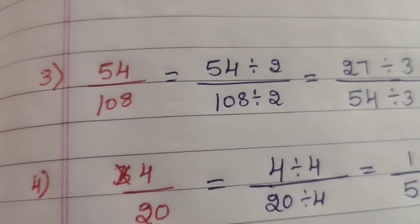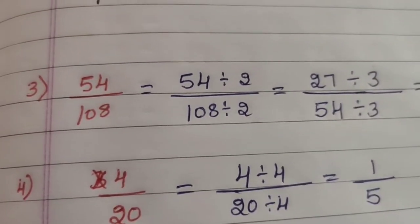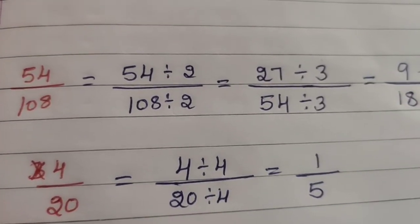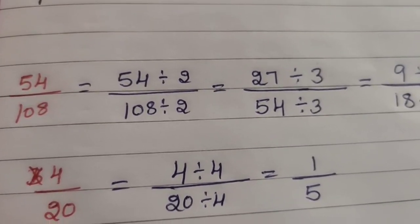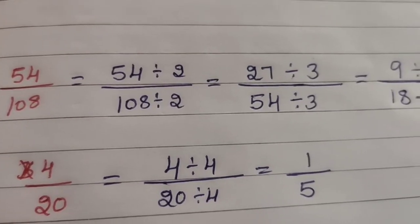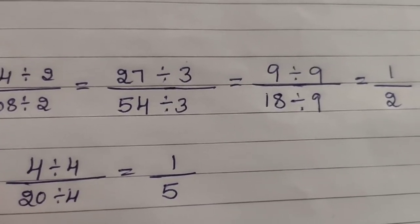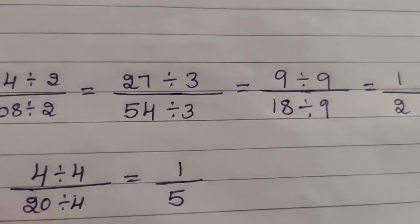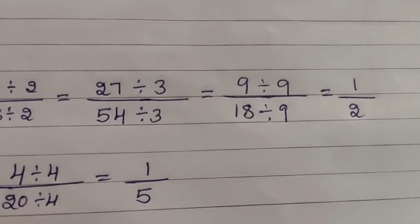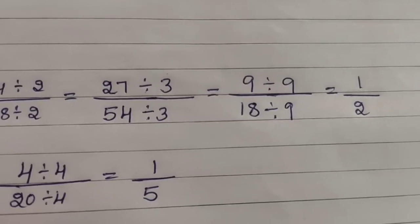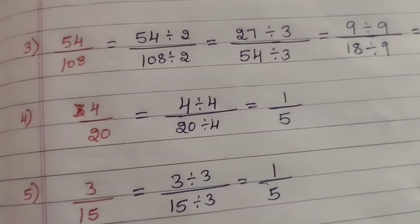Question 3 — 54/108: divide by 2 first: (54÷2)/(108÷2) — 2 twenties are 40... giving 27/54. Then divide by 3: (27÷3)/(54÷3) — 3 nines are 27, 3 eighteens are 54 — giving 9/18. Then divide by 9: 9 ones are 9, 9 twos are 18 — giving 1/2.